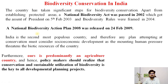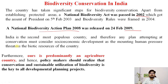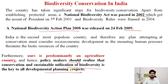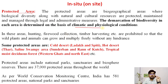Now let's look at the Indian scenario. The National Biodiversity Act was passed in 2002 and finally implemented in 2009 as an action plan. India has huge biodiversity and is predominantly an agrarian community, so policymakers must realize that sustainable utilization of biodiversity is essential in Indian developmental planning. In-situ conservation in India involves protected areas demarcated by climatic and physiological conditions — the main parameters being climate and physiology.